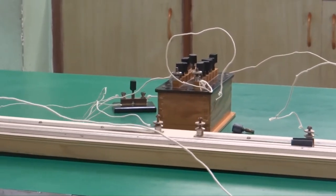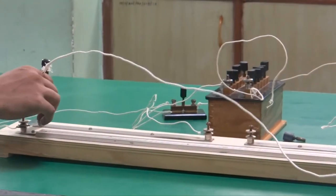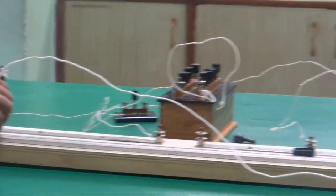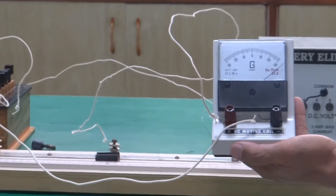First, we will check for the deflection or the null point. Place it on one extreme edge. You can see that the deflection is towards the right.